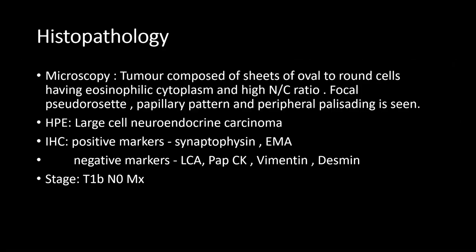The patient went on to have histopathology, which on microscopy revealed tumor composed of sheets of oval to round cells having eosinophilic cytoplasm and a high NC ratio. Focal pseudorosettes, papillary pattern, and peripheral palisading were seen. On histopathology, large cell neuroendocrine carcinoma was confirmed. Immunohistochemistry had positive markers for synaptophysin and EMA, and the stage was given as T1B with no nodal or metastatic deposit.